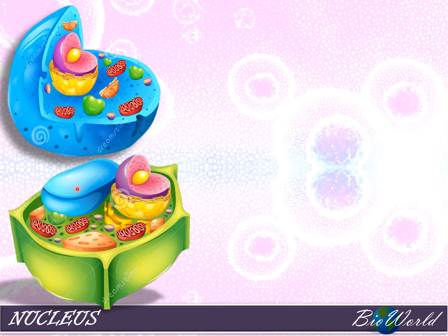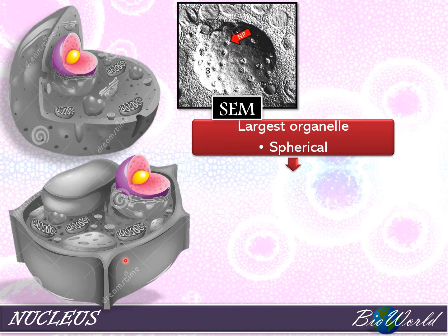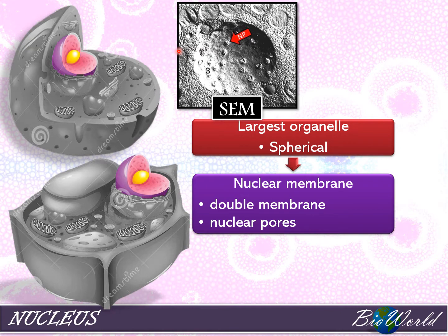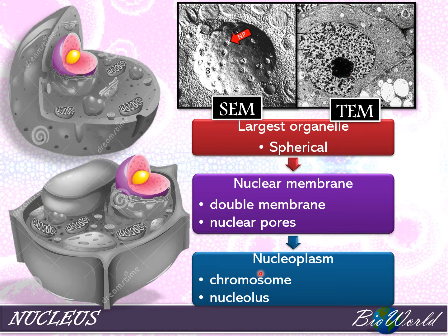We'll begin with the largest organelle, that is the nucleus. You can find the nucleus both in the animal cell as well as the plant cell. When viewed under a scanning electron microscope, the nucleus is a spherical organelle with pores on its surface, which we call the nuclear pore. Under a transmission electron microscope, the nuclear membrane is actually a double membrane, and inside the nucleus you have fluid called the nucleoplasm, which also contains the chromosomes as well as the nucleolus.